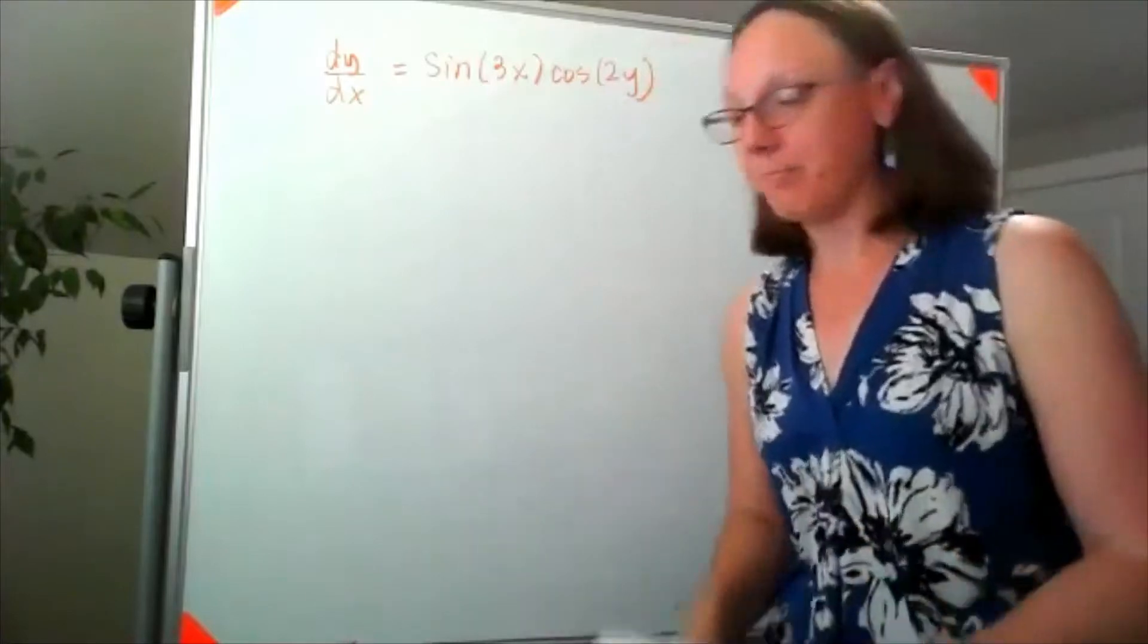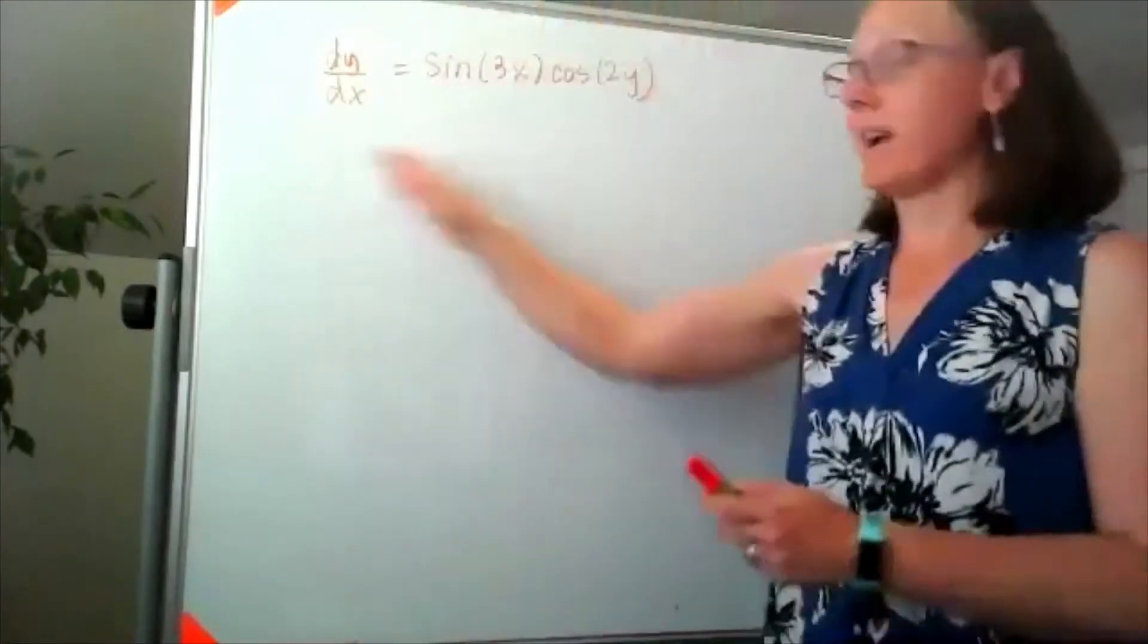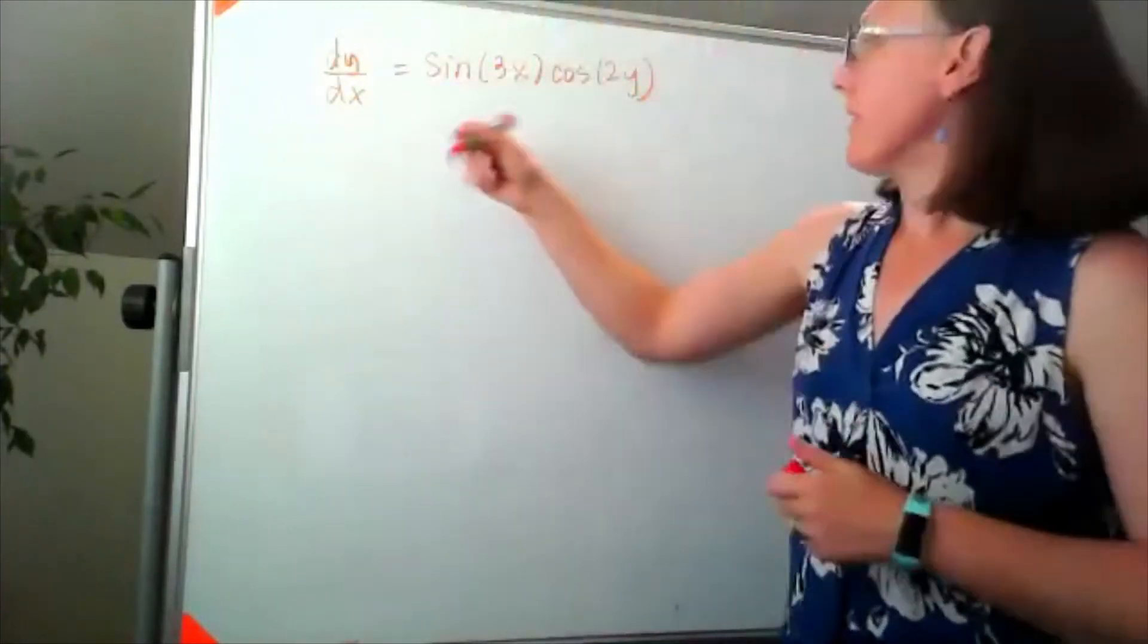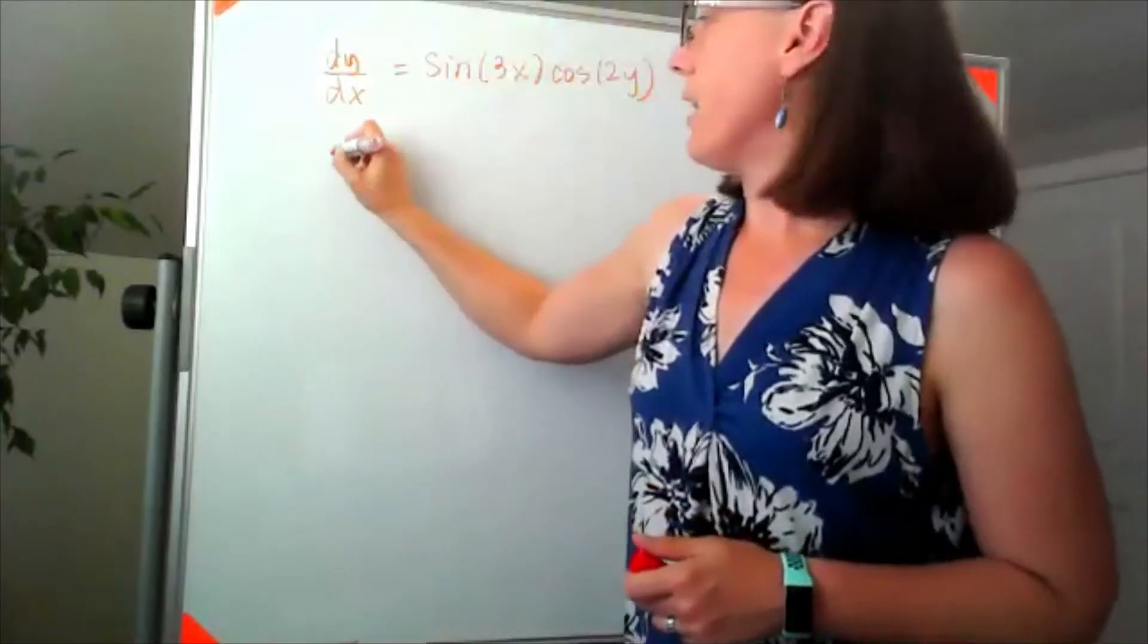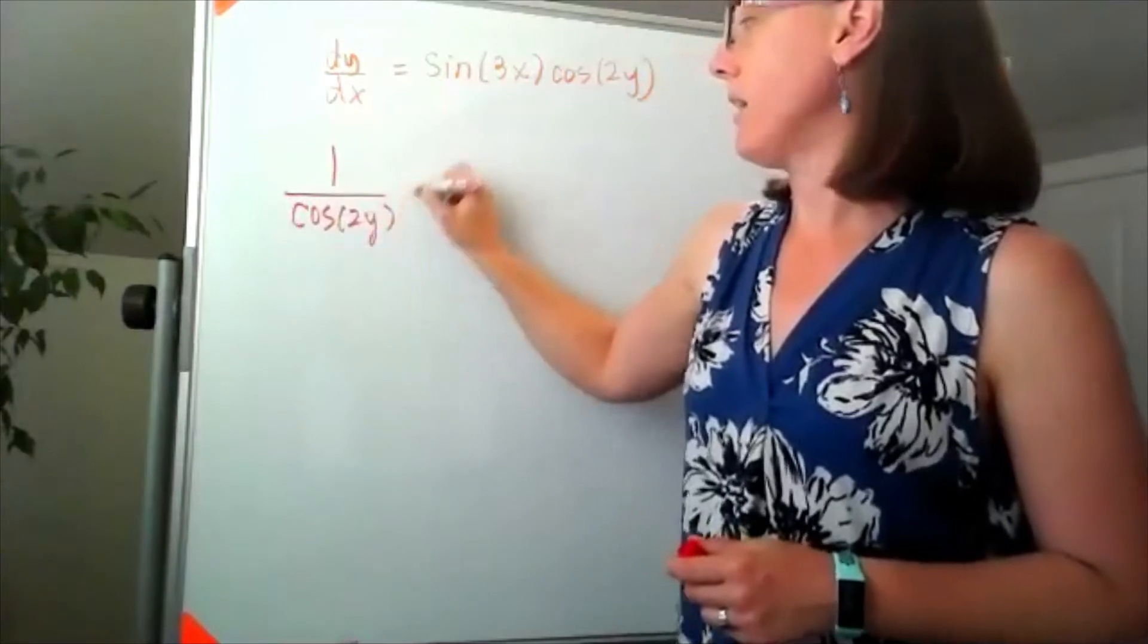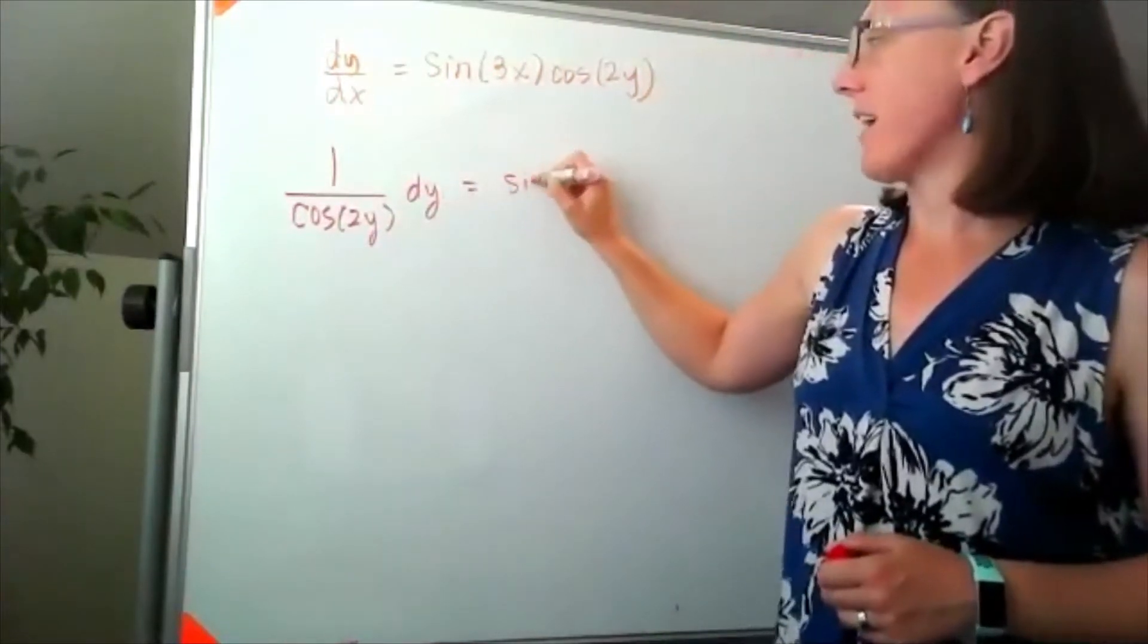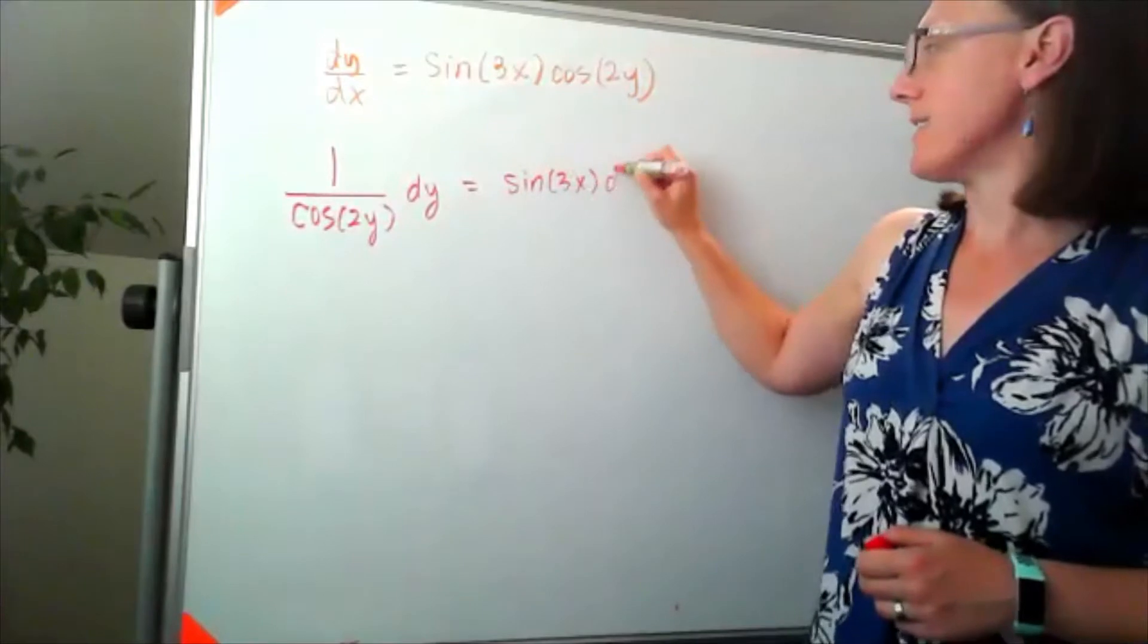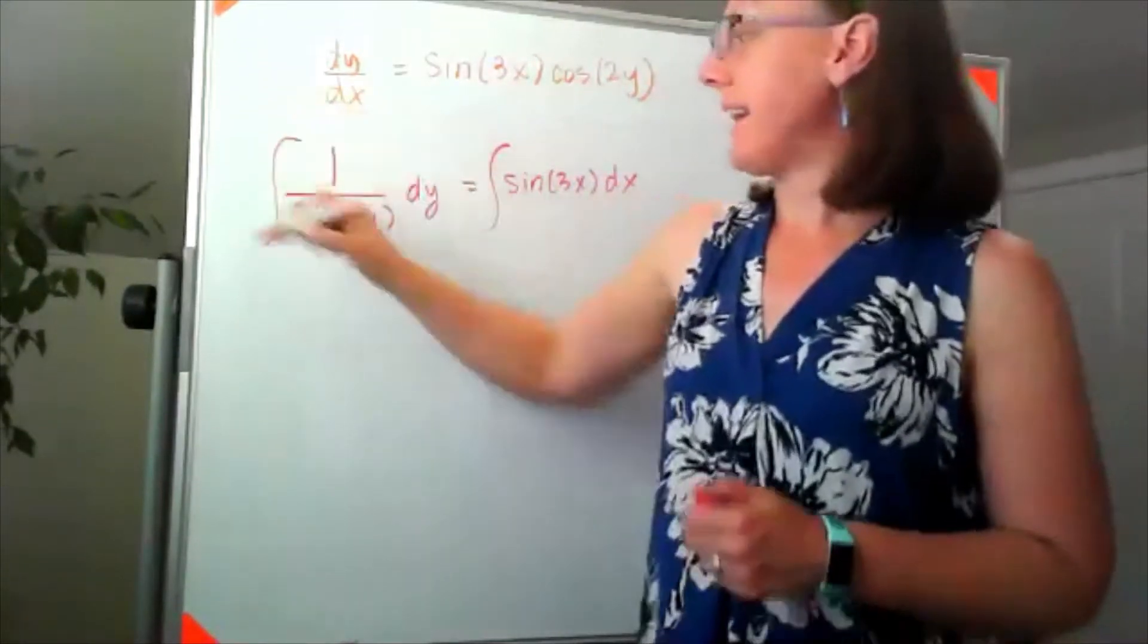I know that it's separable, and if I get my y's over on the left-hand side, I'd end up with 1 over cosine of 2y dy equals sine of 3x dx.